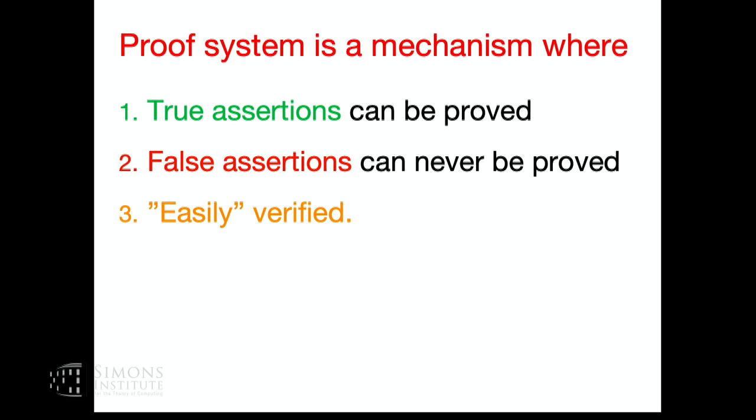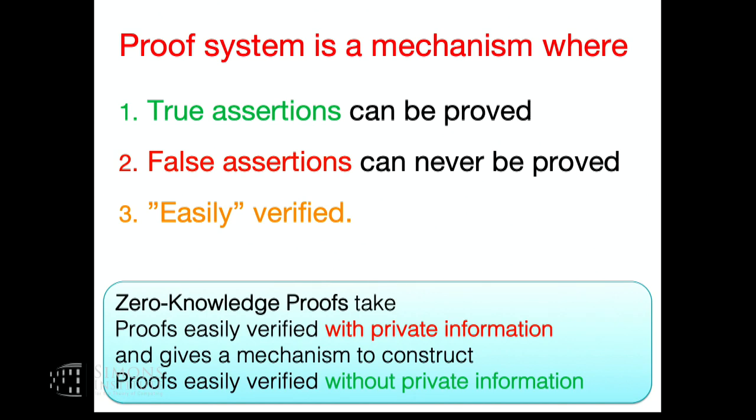I'm going to explain what zero-knowledge proofs are and show some constructions. A proof system satisfies three properties: true assertions can be proved, false assertions cannot be proved, and it needs to be easily verifiable. From a computer science perspective, 'easily verified' means verifiable in probabilistic polynomial time. One way to view zero-knowledge proofs is as a compiler that takes proofs you can verify with private information and transforms them into proofs that let you verify the same thing without the private information.